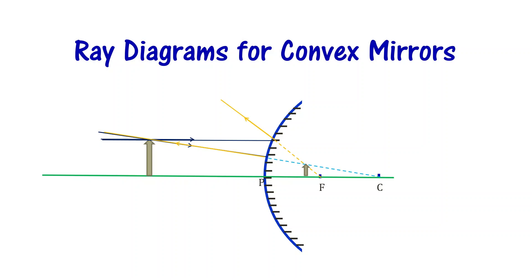Let us now learn about ray diagrams for convex mirrors. We know that the position of the object with respect to the mirror is going to affect the properties of the image.